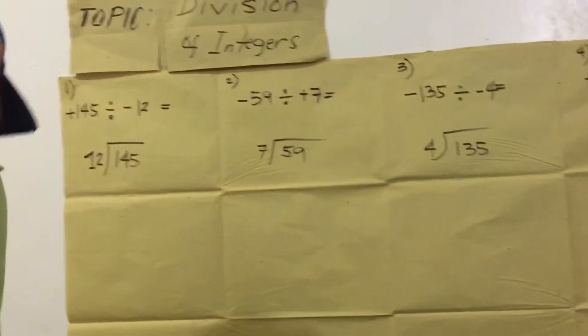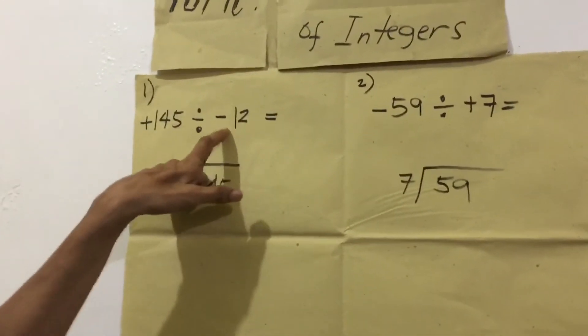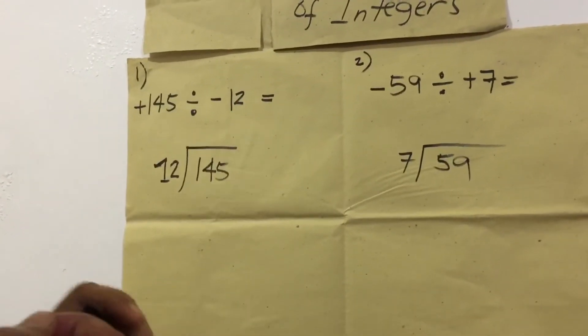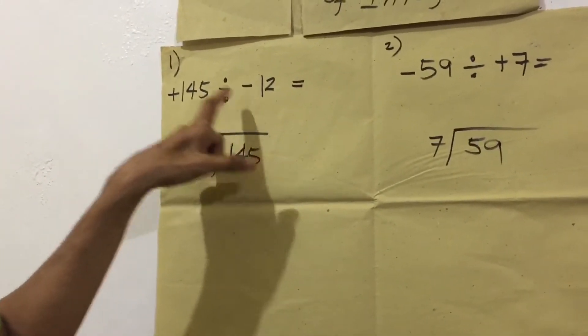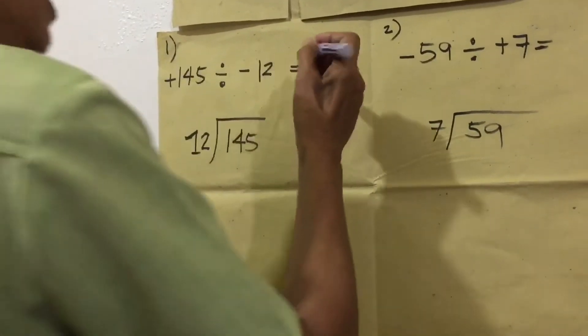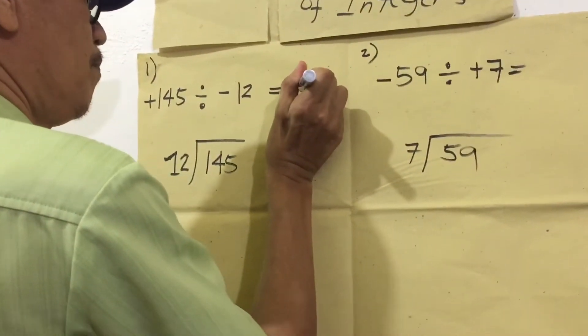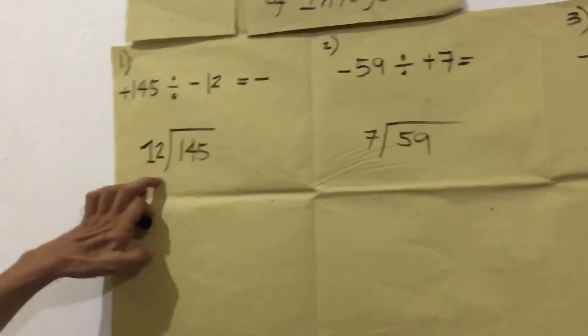Sagotan na natin ang number one. Positive 145 divided by negative 12. Ang unang gagawin natin ay ang side muna yung ating sasagutin. Positive divided by negative equals negative.